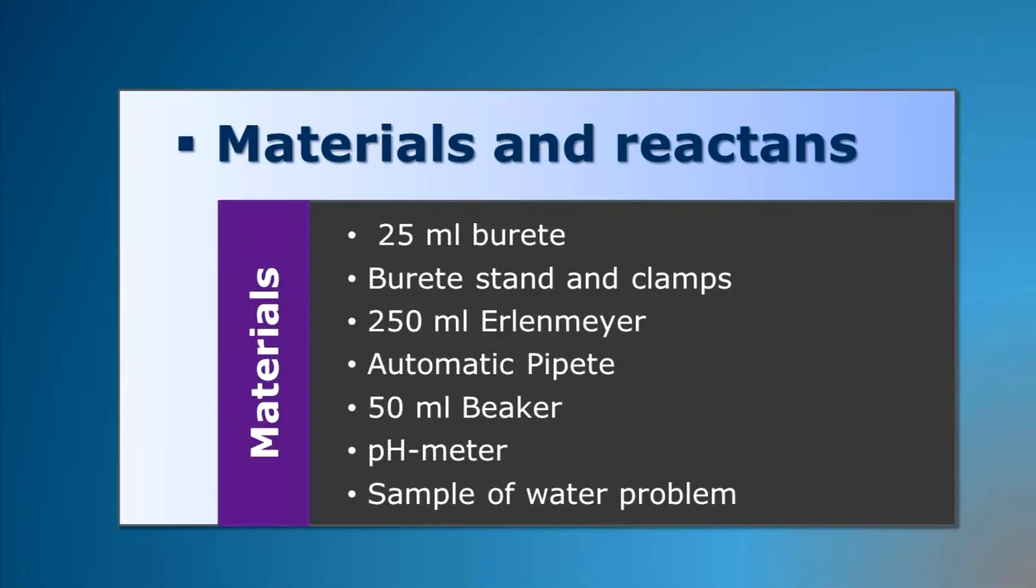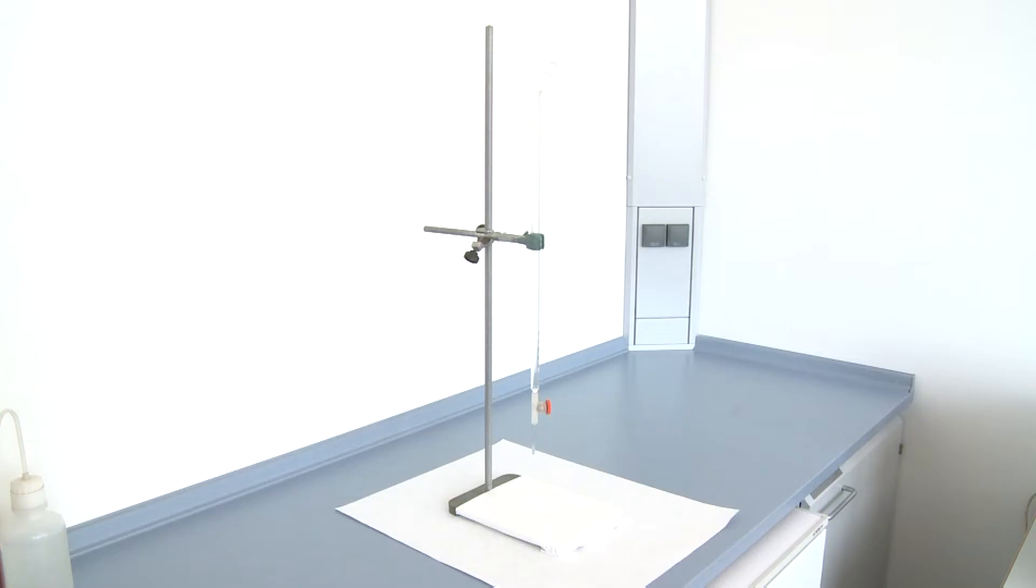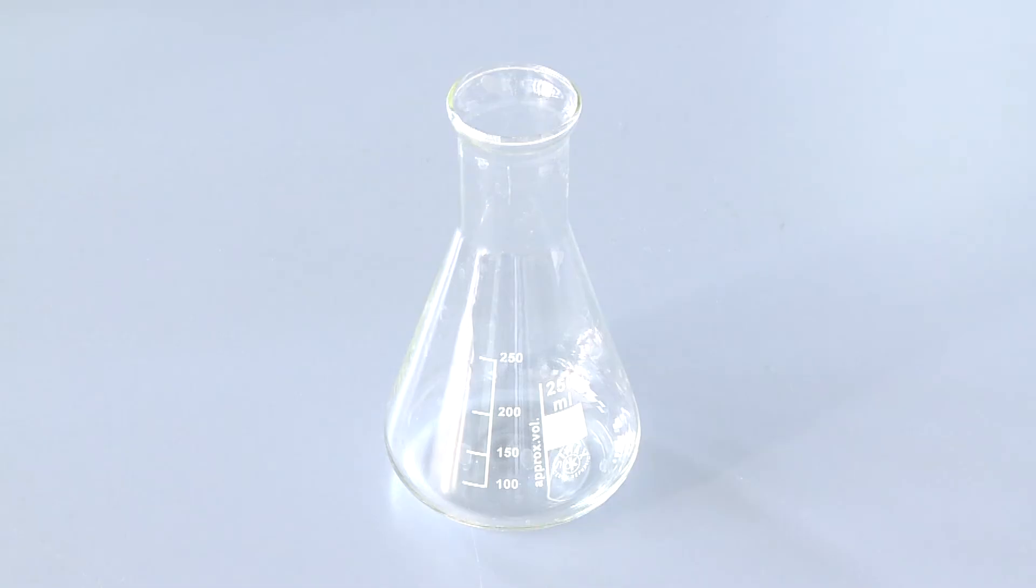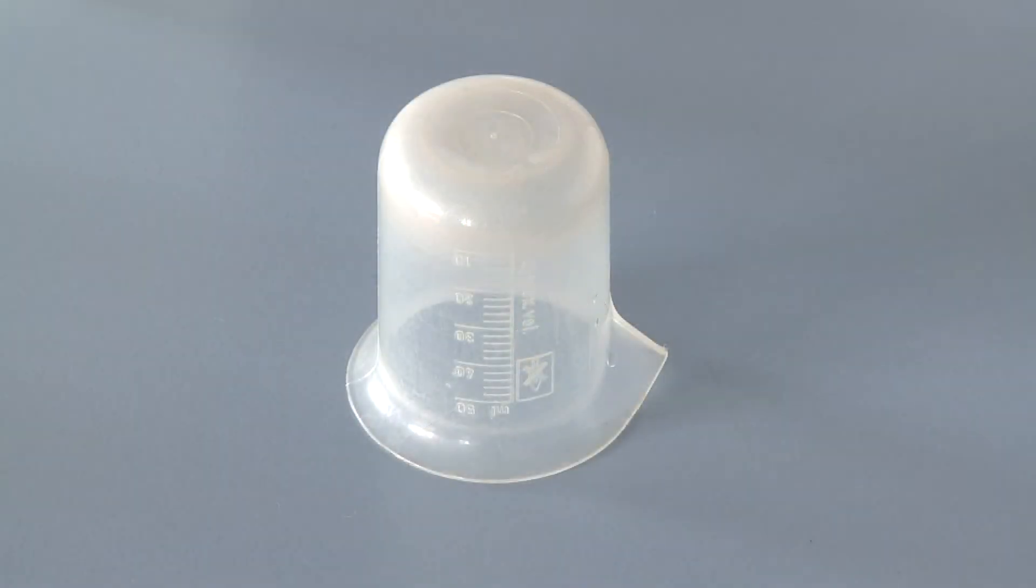Materials and reactants. The following materials are required to do the assay: 25 ml burette, burette stand and clamps, two 250 ml Erlenmeyer flasks, automatic pipette, beaker.